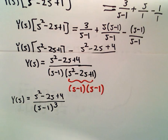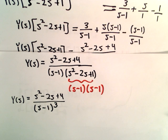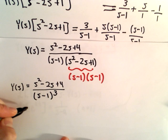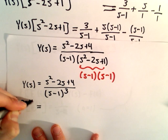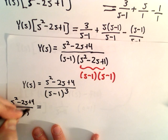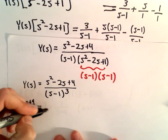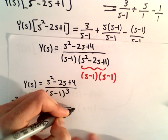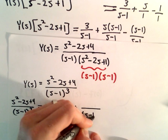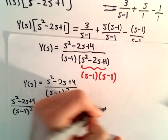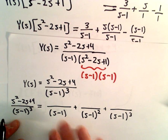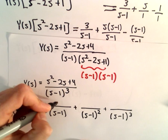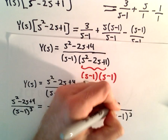Now I'm going to use partial fractions to break this apart. We've got s squared minus 2s plus 4 over s minus 1 to the third power. We're going to have s minus 1 to the first power, s minus 1 squared, and s minus 1 to the third power. Since each of the terms in parentheses are linear, we'll just put a generic constant on top — I'm going to use a, b, and c.